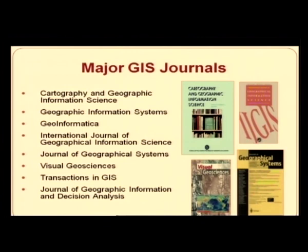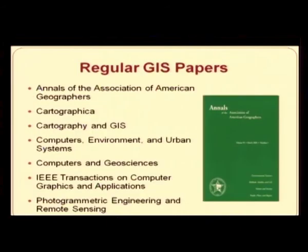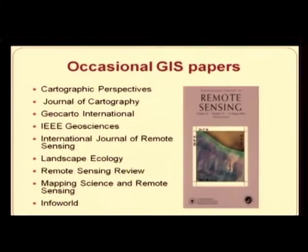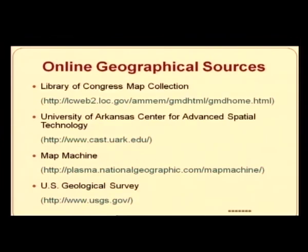Various GIS journals are available in libraries, including specialty journals such as GIS Laws, Grass Clippings, and GIS Europe; regular GIS papers such as Cartographica, Cartography and GIS, Computer Geosciences, and IEEE publications; and occasional papers such as Cartographic Perspectives and Journal of Cartography. Online geographical sources every librarian should know include: Periodical Historical Atlas of Europe, Geography IQ World Atlas, Library of Congress Map Collections, University of Arkansas Center for Advanced Spatial Technology, Map Machines, and US Geological Survey.